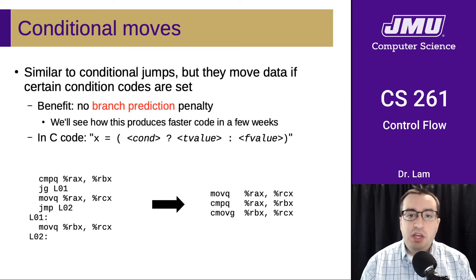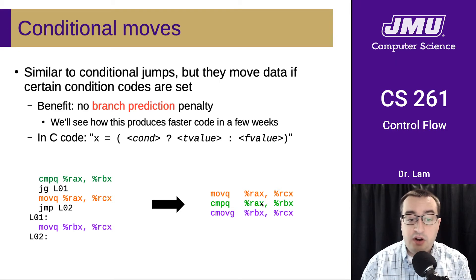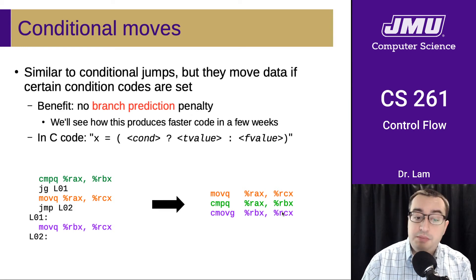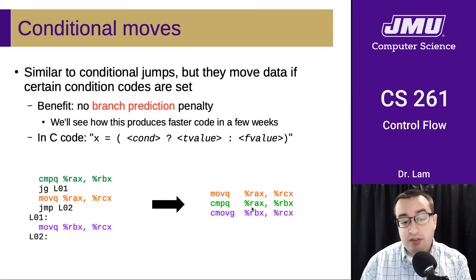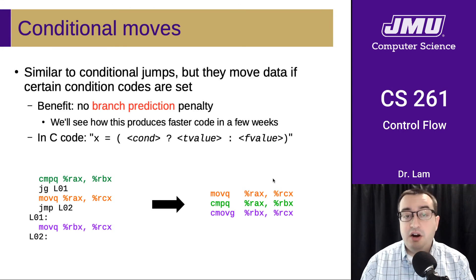This could be equivalently expressed using a conditional move. We move RAX into RCX first, then compare RBX to RAX. If RBX is greater than RAX, we conditionally move RBX into RCX instead. If RBX is less than or equal, RCX retains the original value from RAX.